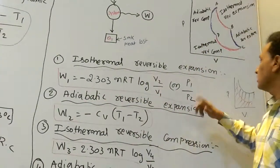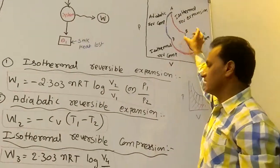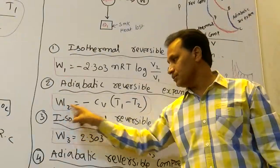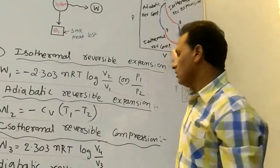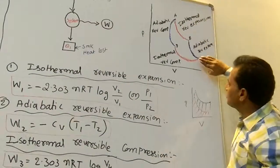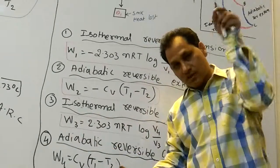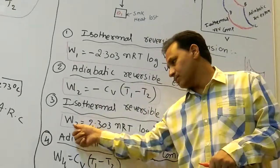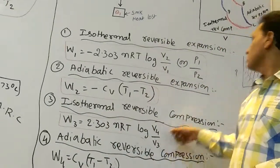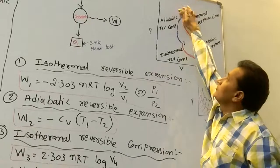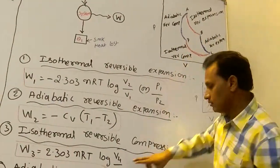Adiabatic reversible expansion: heat is constant, the system is insulated. W2 = minus Cv(T1 minus T2). Next, isothermal reversible compression — work is done on the system, so W3 = plus 2.303 nRT log(V4/V3), where the states are V1P1, V2P2, V3P3, V4P4.